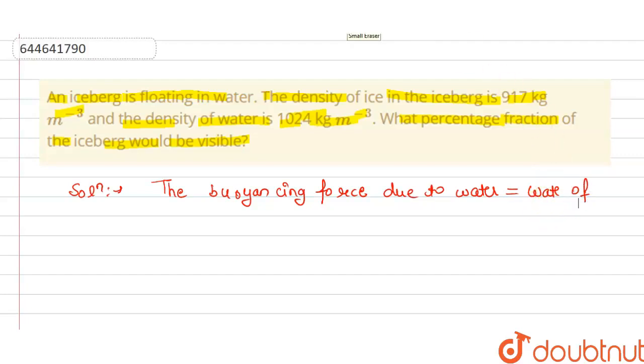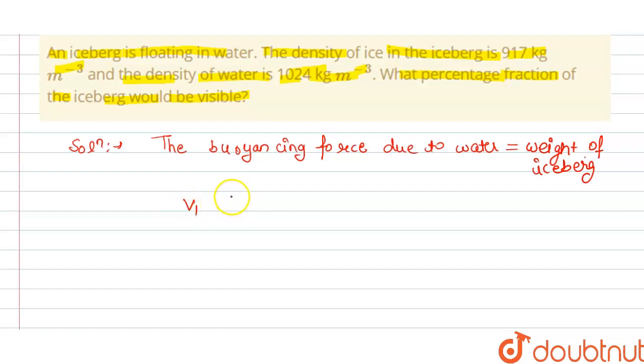We can write this equals weight of iceberg. The balancing force due to water is V₁ρ₁g, where V₁ is volume 1, ρ₁ is density 1, and g is acceleration due to gravity. This must equal mg, which equals V₂ρ₂g.